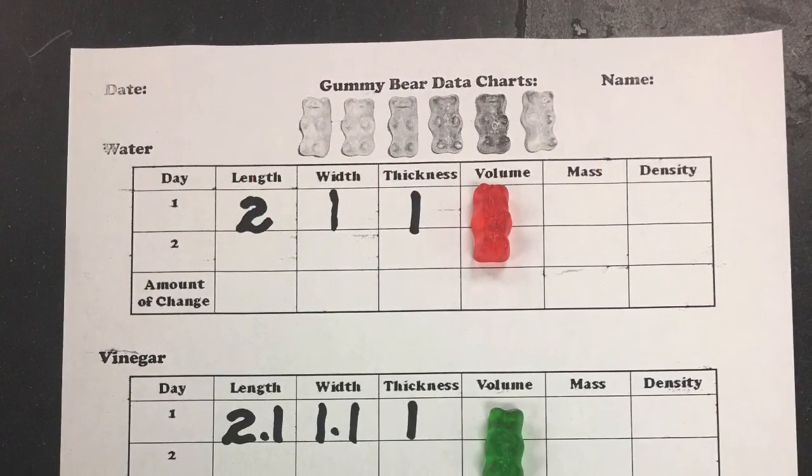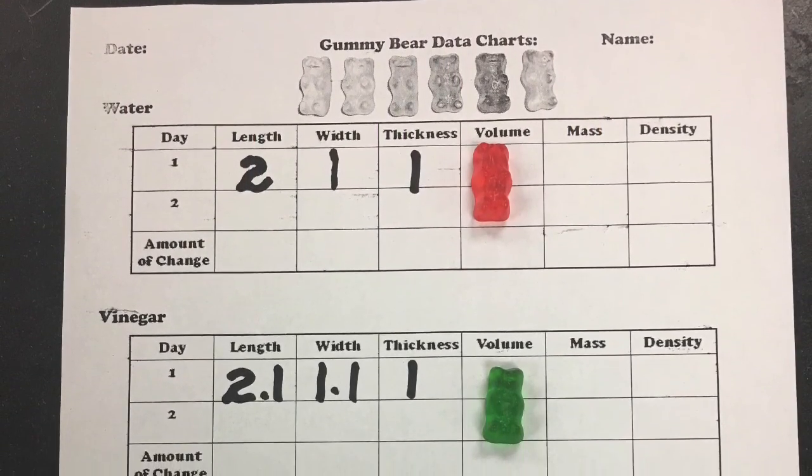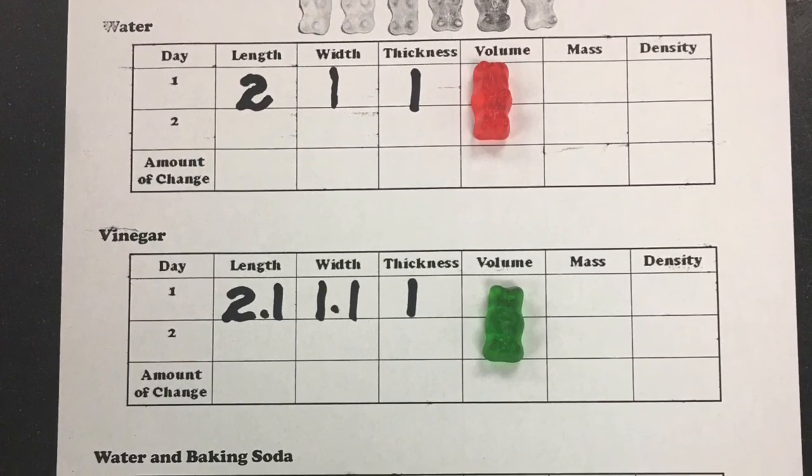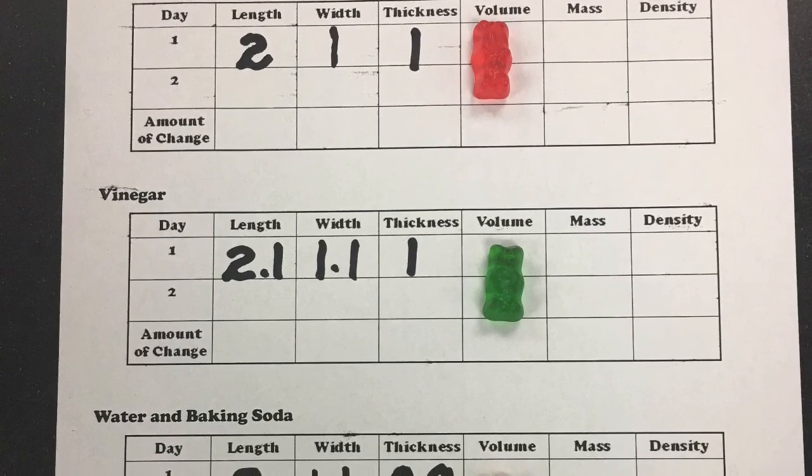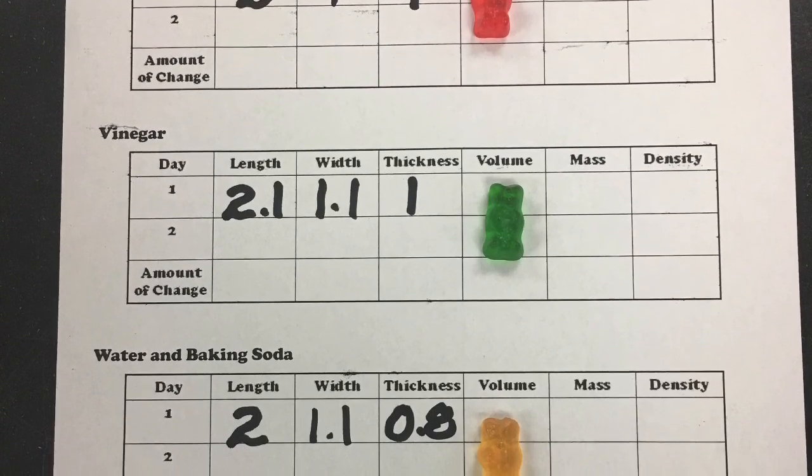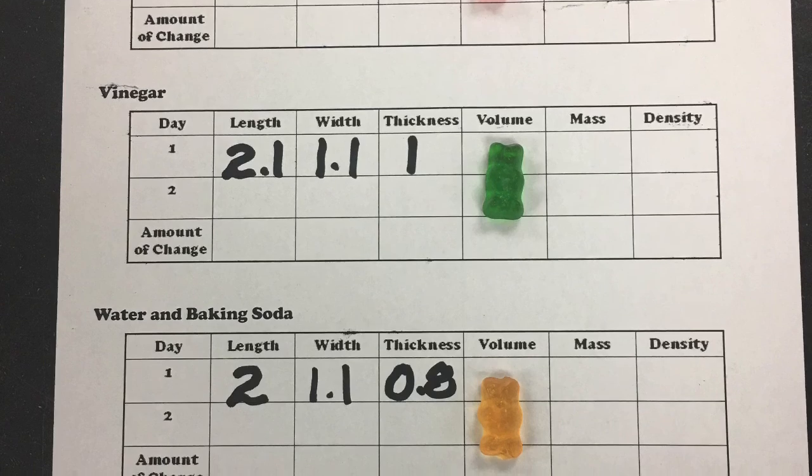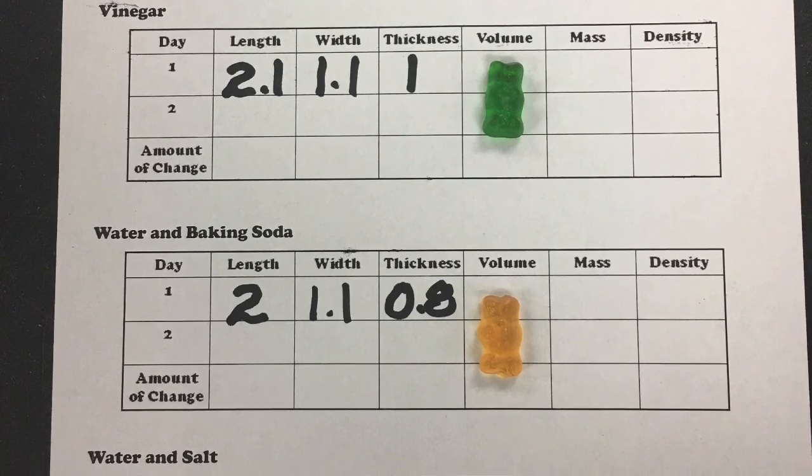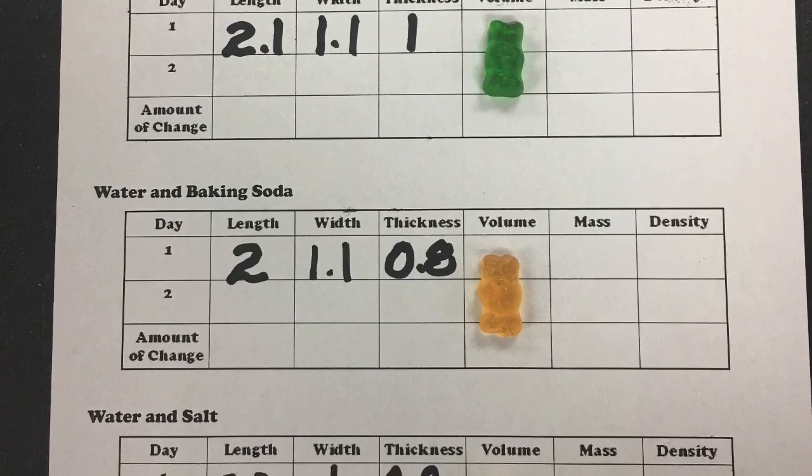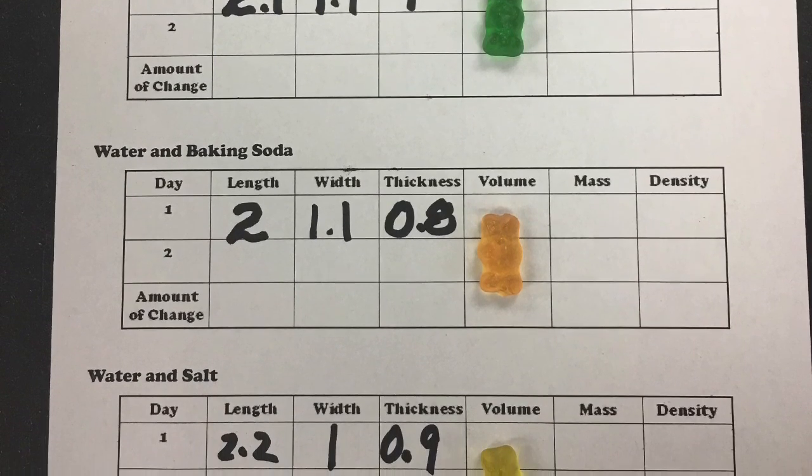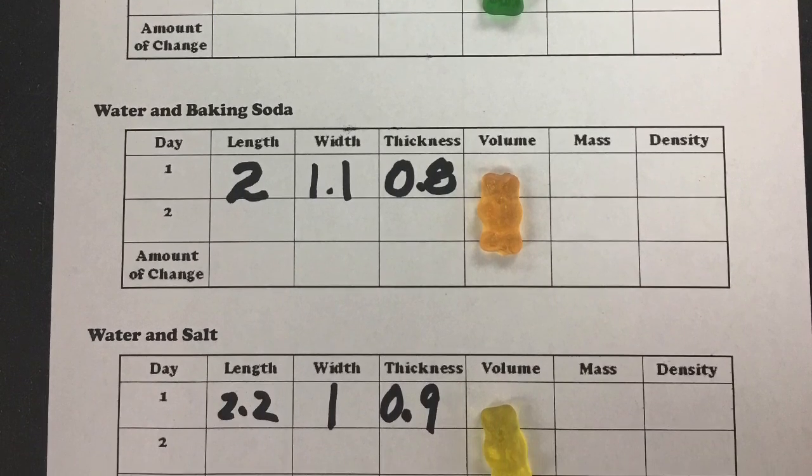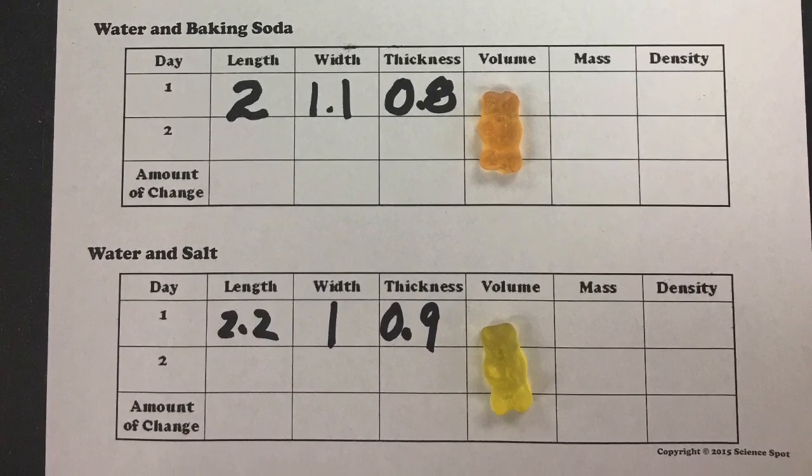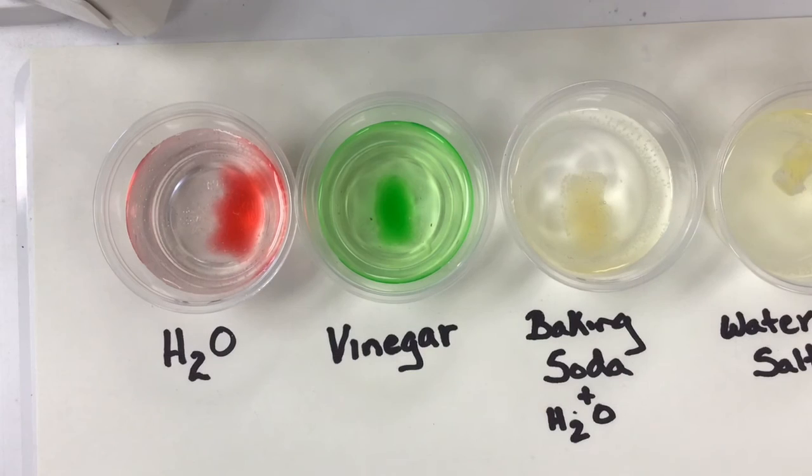Now it's time for the measurements on day one. So the water was 2 for length, width was 1, thickness was 1. Remember we're doing this in centimeters. Vinegar 2.1 centimeters, width 1.1 centimeters, thickness was 1. Water and baking soda, length was 2, width was 1.1, thickness was 0.8 centimeters. And to finish up the water and salt, length was 2.2, width 1.